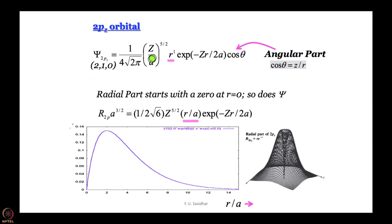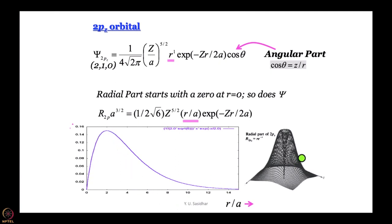Let us have a look at the functional form: a constant multiplied by r to the power 1, multiplied by e to the power minus Zr/2a. An increasing function of r multiplied by an exponential decay — it is no surprise that it goes through a maximum. The radial part of the wave function starts at 0 when r=0, goes up and comes down. Do not forget that the vertical axis here is capital R, the radial function.